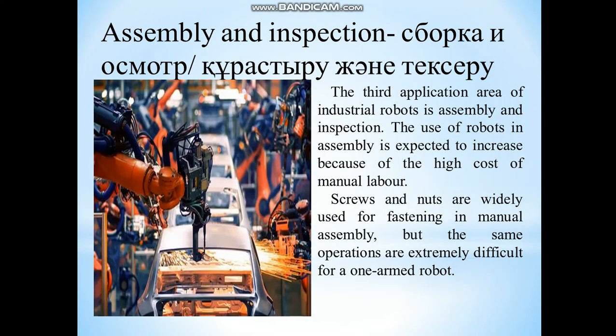Third – assembly and inspection – сборка и осмотр. The third application area of industrial robots is assembly and inspection. The use of robots in assembly is expected to increase because of the high cost of manual labor. Screws and nuts are widely used for fastening and manual assembly, but the same operations are extremely difficult for a one-armed robot.